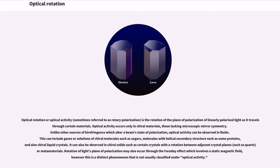Optical Rotation. Optical rotation or optical activity is the rotation of the plane of polarization of linearly polarized light as it travels through certain materials. Optical activity occurs only in chiral materials, those lacking microscopic mirror symmetry.